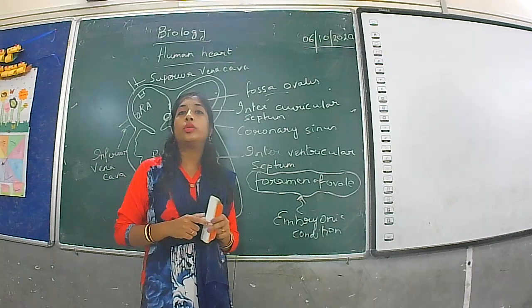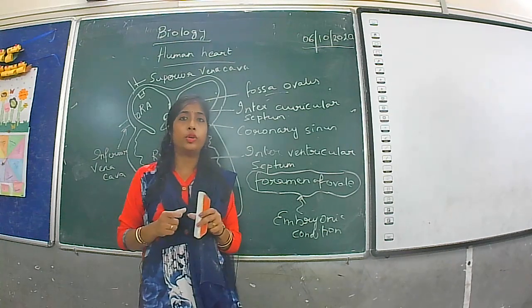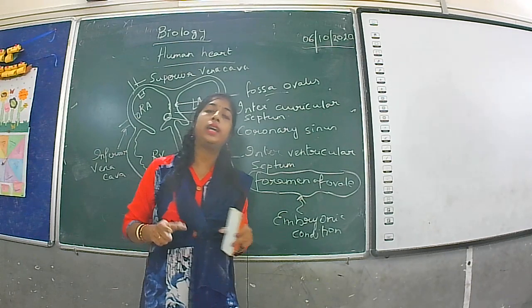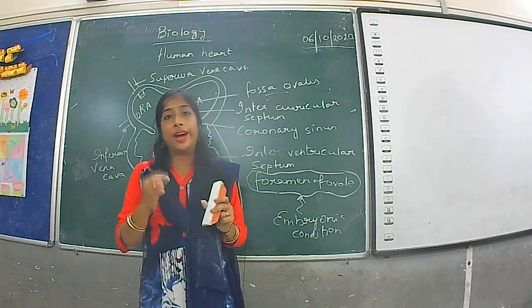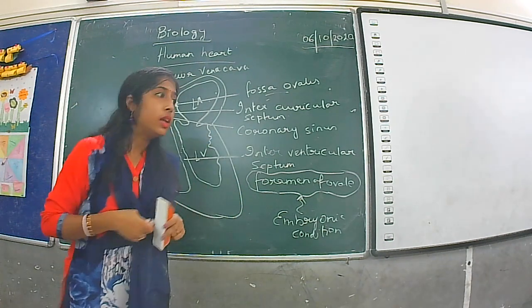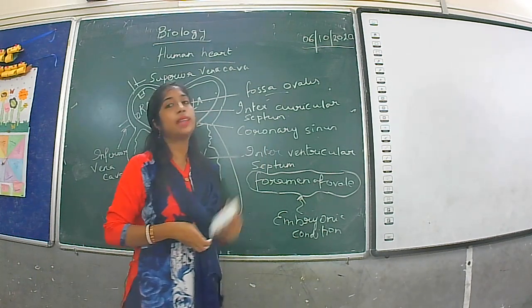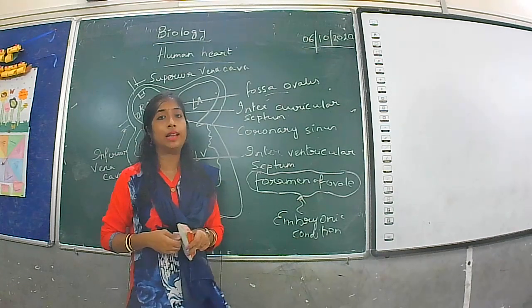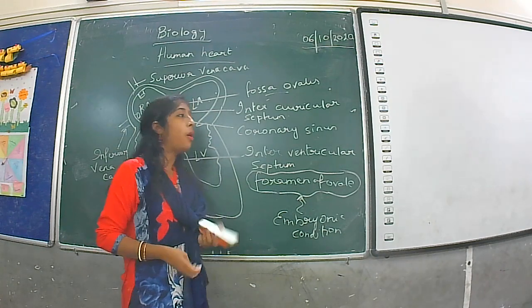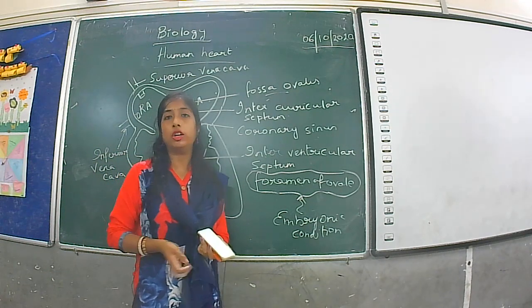A valve prevents any kind of backflow of blood. In the inferior vena cava and the coronary sinus, valves are present to prevent backflow. However, the superior vena cava does not have a valve because of its location — it is placed at an angle, so when the right auricle contracts, the superior vena cava automatically gets closed.